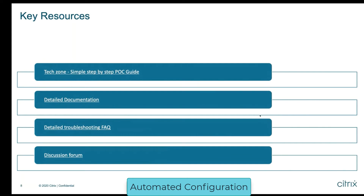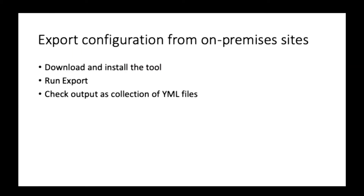Now let me demo this tool. There are two parts to automated configuration: exporting your configuration from the on-premise site, and importing that configuration into your cloud site. In the export configuration part, there are three steps: download and install the tool on an on-prem DDC or a domain-joined machine, run the export command, and then get the output as a collection of YAML files for the entire configuration.